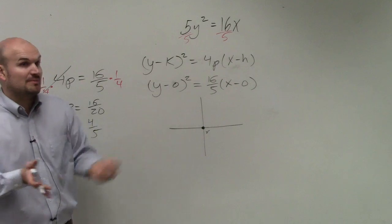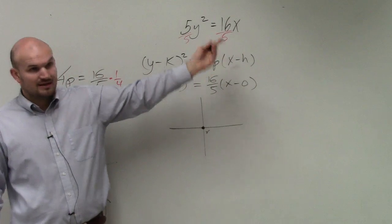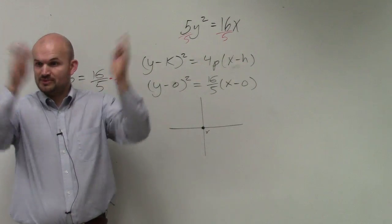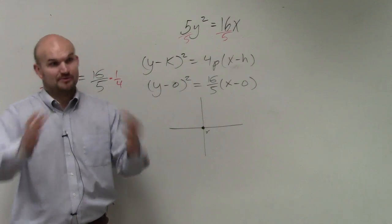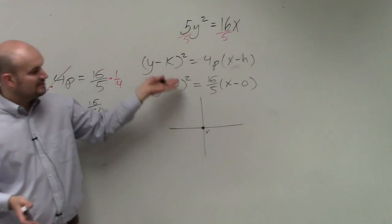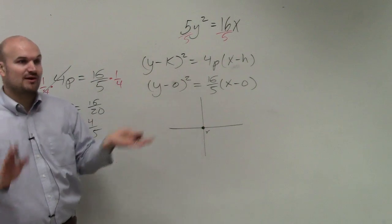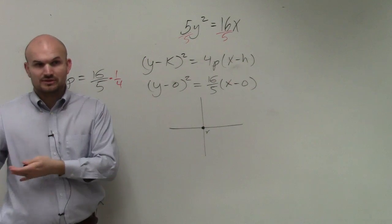Now, remember y is squared. Remember x is squared? Remember standard form? X squared opens up, opens down. Vertex form, x is squared, opens up, opens down. Now, we're talking about y squared. So the graph is going to be opening to the right or to the left, correct?